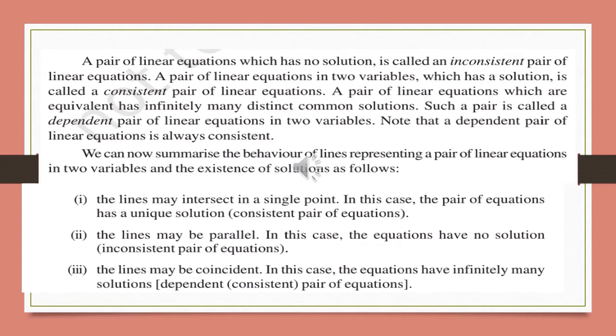The lines may be parallel. In a plane, two lines may be parallel. When the lines are parallel, the equations have no solution at all — no common values of the variables — because parallel lines never intersect with each other. This type of equations are called inconsistent pairs of equations. The lines may be coincident; in this case the equations may have infinitely many solutions. This is also called a consistent pair of equations, and additionally a dependent type.